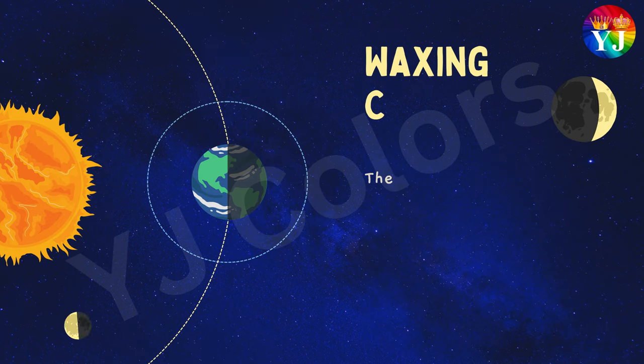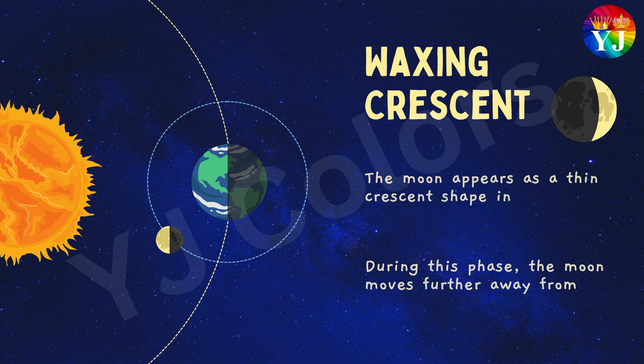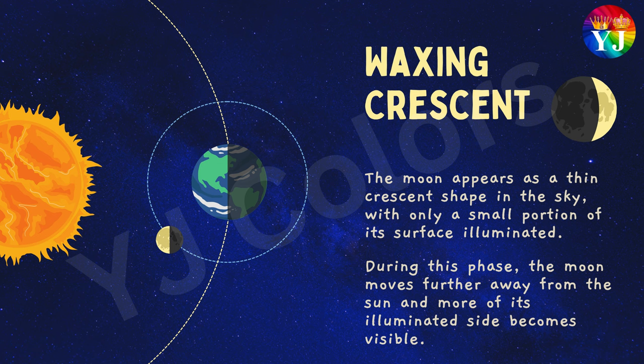Waxing Crescent: The Moon appears as a thin crescent shape in the sky with only a small portion of its surface illuminated. During this phase, the Moon moves further away from the Sun and more of its illuminated side becomes visible.